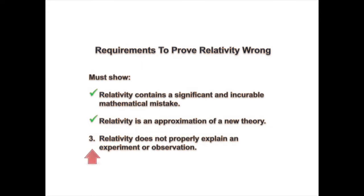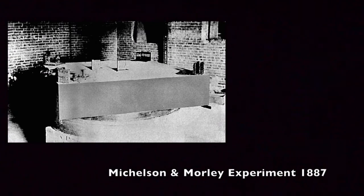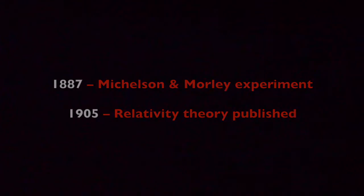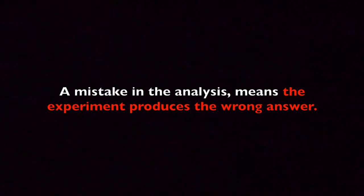Today, I will satisfy the third requirement that shows why relativity is wrong. Specifically, I'm going to explain how relativity fails to properly explain the Michelson-Morley experiment, which is one of the most important experiments associated with relativity. Although the experiment predates relativity, supporters often cite it as proof of Einstein's work. However, as you'll soon see, the experiment is incorrectly analyzed, and this proof evaporates when viewed using the proper equations.